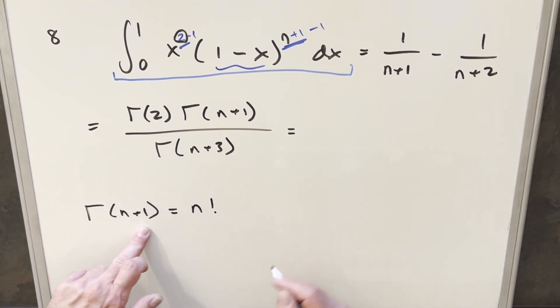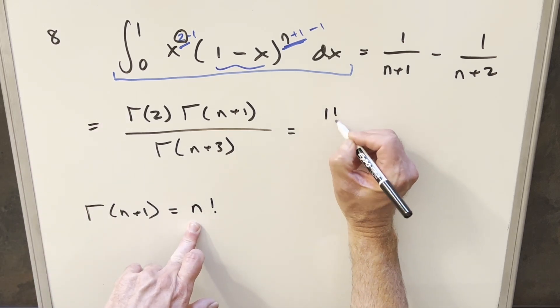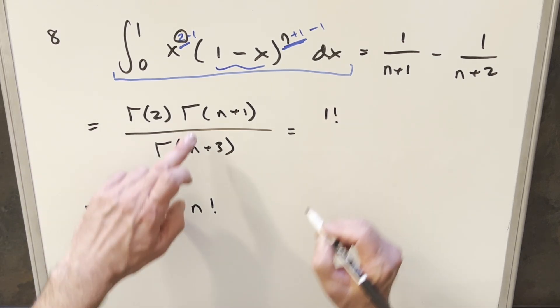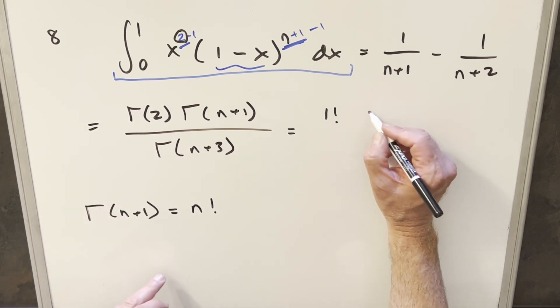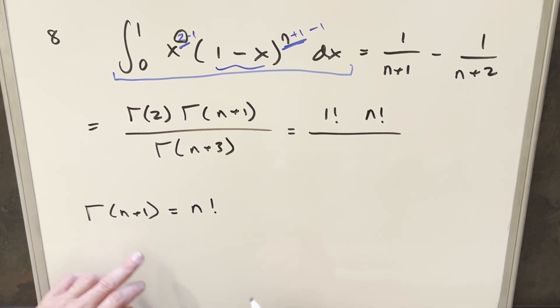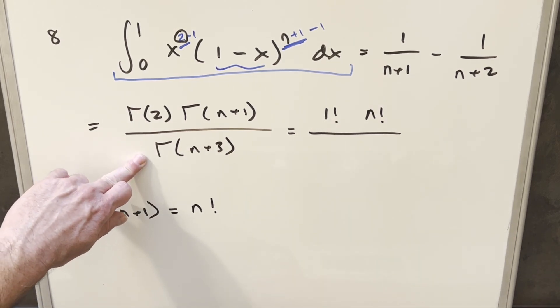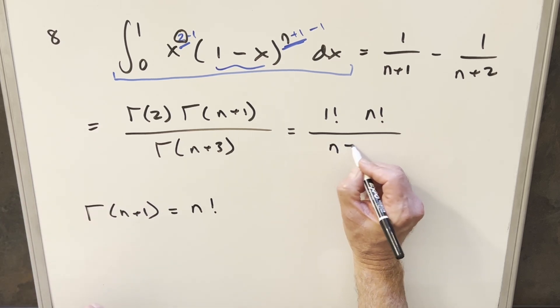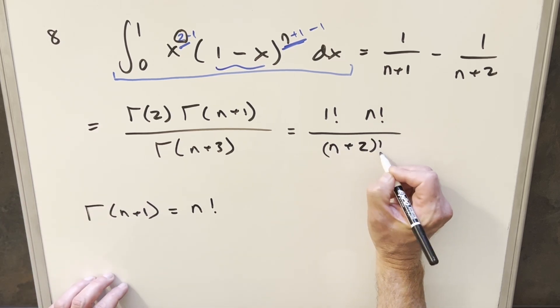So transforming it for gamma of 2, then putting in terms of factorial, that's just going to be 1 factorial. Then for gamma of n plus 1, that's exactly this. This is going to be n factorial. And then here on this gamma of n plus 3, I can write that as n plus 2 factorial.